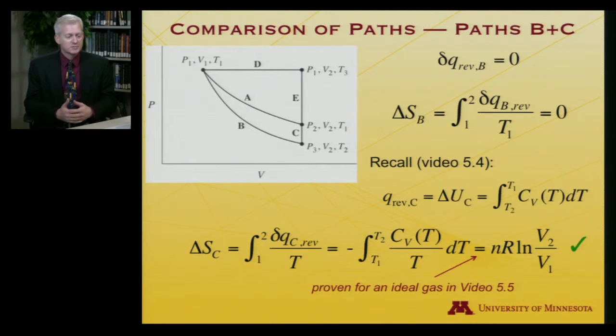So entropy is obeying its necessary behavior as a state function - that independent of path, when we arrive at the final point, we have the same net entropy change. So I'm going to pause here for a second, and I'm going to let you consider what the entropy change is for path E, to see if you've appreciated the development so far.